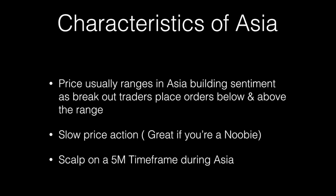Characteristics of Asia: price usually ranges in Asia, building sentiment as breakout traders place orders below and above the range. Slow price action is great if you're a newbie, because you can be in a trade — especially forex futures — and go into green or drawdown real fast based on tick values, which are different than in forex spot. The slow movement is beneficial because if you're down, say, 50 or 60 bucks on one contract and you know it's going to keep going against you, you can get out at a small loss.